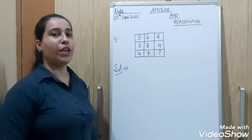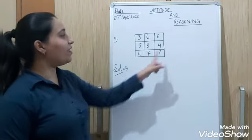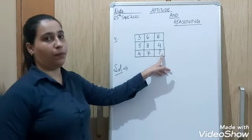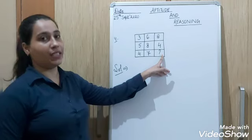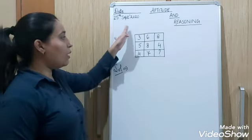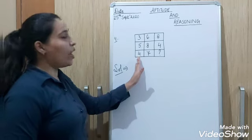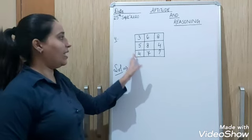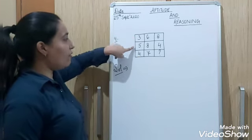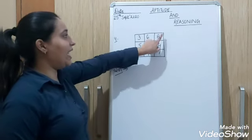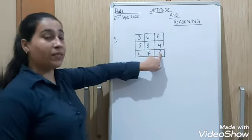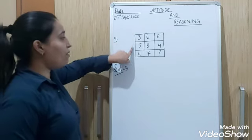Now see the question number 4. Here you have a grid. Now here is the missing term. Now you have to identify the missing term. Now let's move column wise. 3, 5, 4, then 6, 8, 7, then 8, 4. You have to find the missing term.